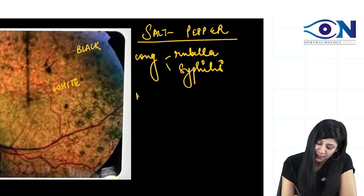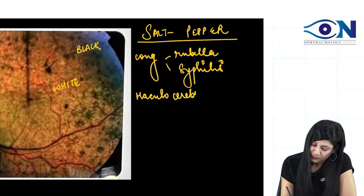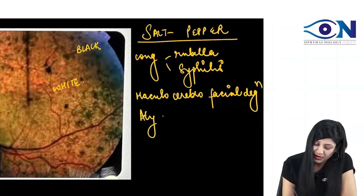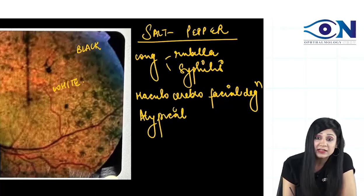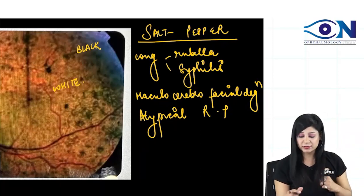Then we can also get maculocerebrofacial degeneration. We can get atypical RP - RP means retinitis pigmentosa. Atypical RP we are going to get,